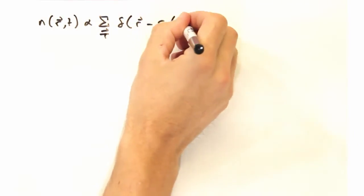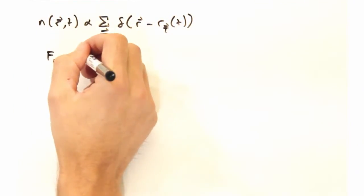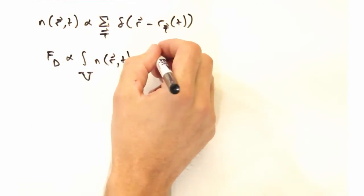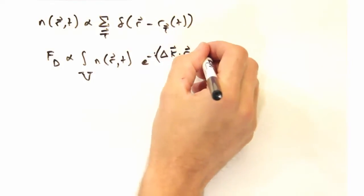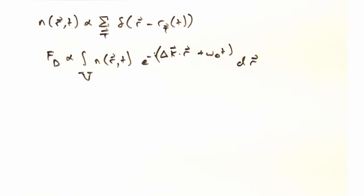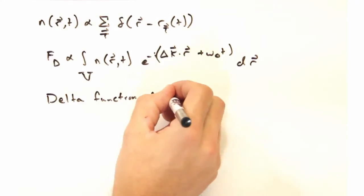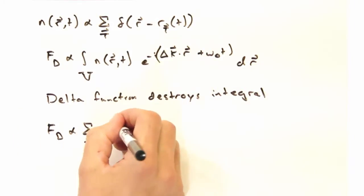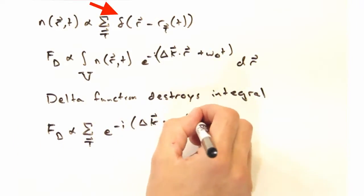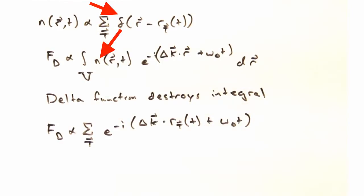Okay, so we have these two expressions then. We have this expression for the time dependence of the scattering density, and we also have this highly generalized description of the scattered amplitude at the detector. What we can do is we can insert the scattering density into this integral, and what's nice is that because we have delta functions in the integral, the integral is going to drop away and we're going to be simply left with a summation here.